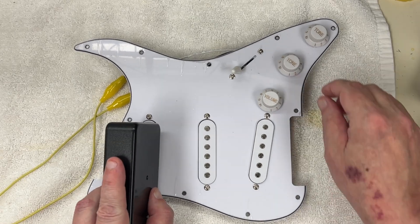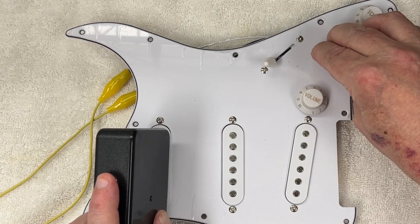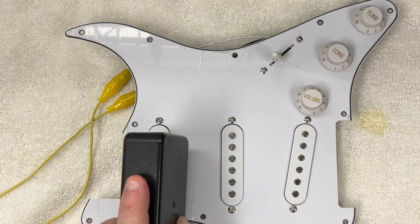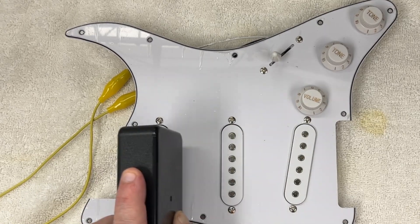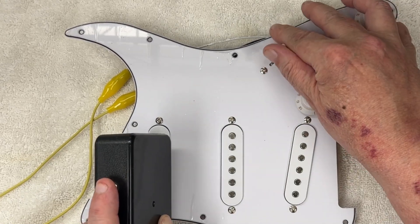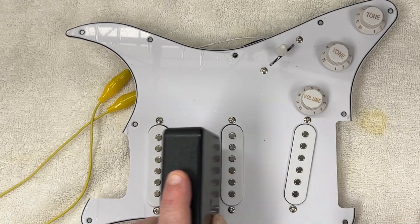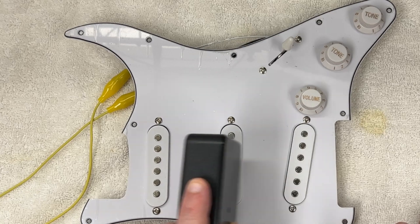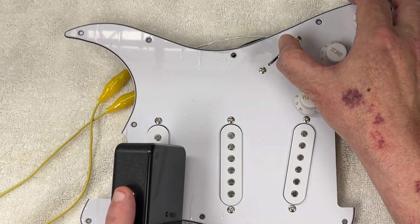Here's a demonstration of the signal injector. Just wave it over the pickup you want to test. The tone control functionality is clearly heard as the harmonics of the square wave are rolled off.